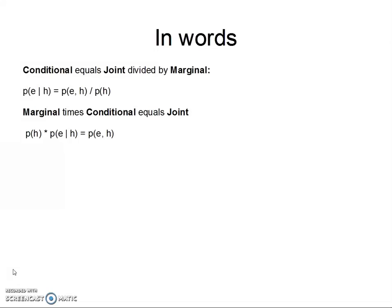Pretty neat. I know we've been dealing with lots of symbols here, so let's put it into words. Conditional is equal to the joint probability divided by the marginal probability. So the conditional of eyes given hair color is equal to the joint probability of eyes and hair color divided by the marginal probability of hair color. Notice that the given is the one you divide by.